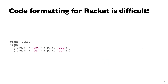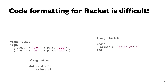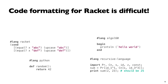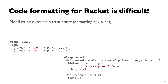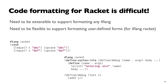First problem: Racket is a language-oriented programming language. It has this thing called #lang. So it's not necessarily parenthetical syntax — you could have #lang Python, or even make up your own language entirely. So the formatter needed to be extensible to support formatting in different #langs. And even focusing on #lang Racket, Racket has macros — you can essentially define user-defined forms — so we need to be flexible to support formatting those user-defined forms.